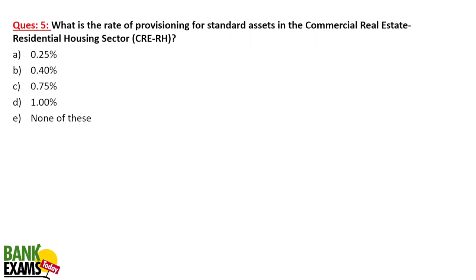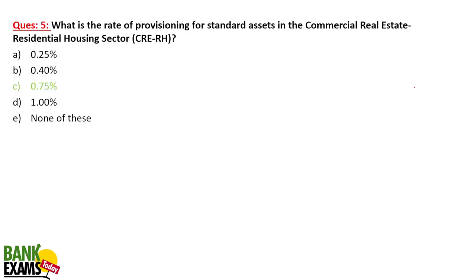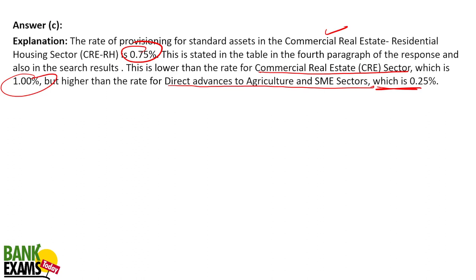What is the rate of provisioning for standard assets in the Commercial Real Estate Residential Housing sector? It is 0.75%. This is lower than the Commercial Real Estate sector which is 1%, but higher than the rate for direct advances to Agriculture and SME sector which is 0.25%. Please remember: CRE Residential Housing = 0.75%, CRE = 1%, Agriculture and SME = 0.25%.